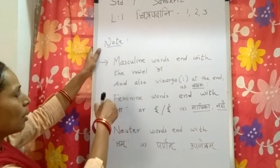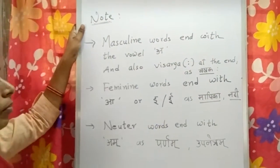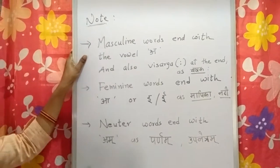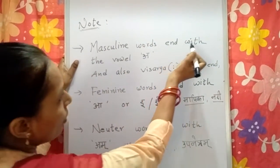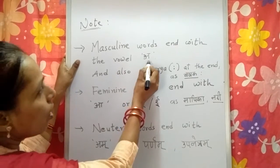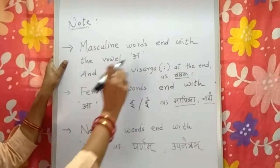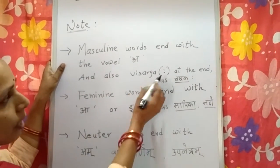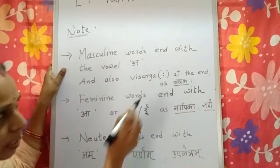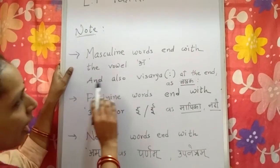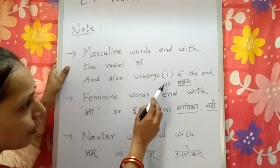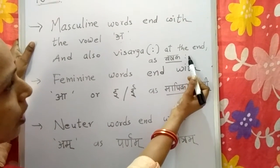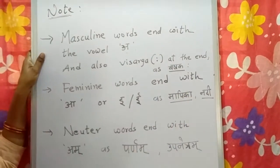Now here are some points that you have to remember. First, in Chitrapadhani 1 we learnt about the masculine words which end with the vowel 'a' and also visarg. Visarg means these two dots — these two dots are a sign of visarg, also at the end. For example, chashakha — chashakha ends with 'a' and visarg at the end.